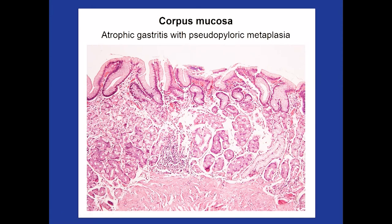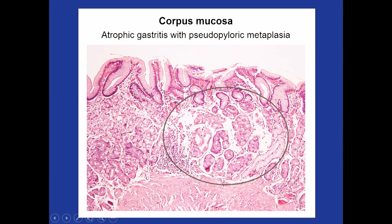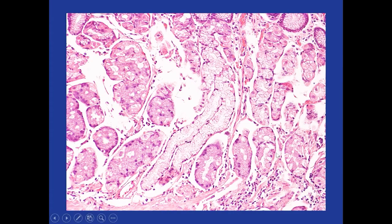All that I have shown is human tissue. This is a biopsy from the corpus. In this area you can recognize more or less normal density of glands. In the center of the image there is an area of atrophy where the glands are very small. In this little gland to the right, it has completely lost the parietal and chief cells — this is pseudopyloric metaplasia. By definition, pseudopyloric metaplasia only occurs in the oxyntic mucosa.